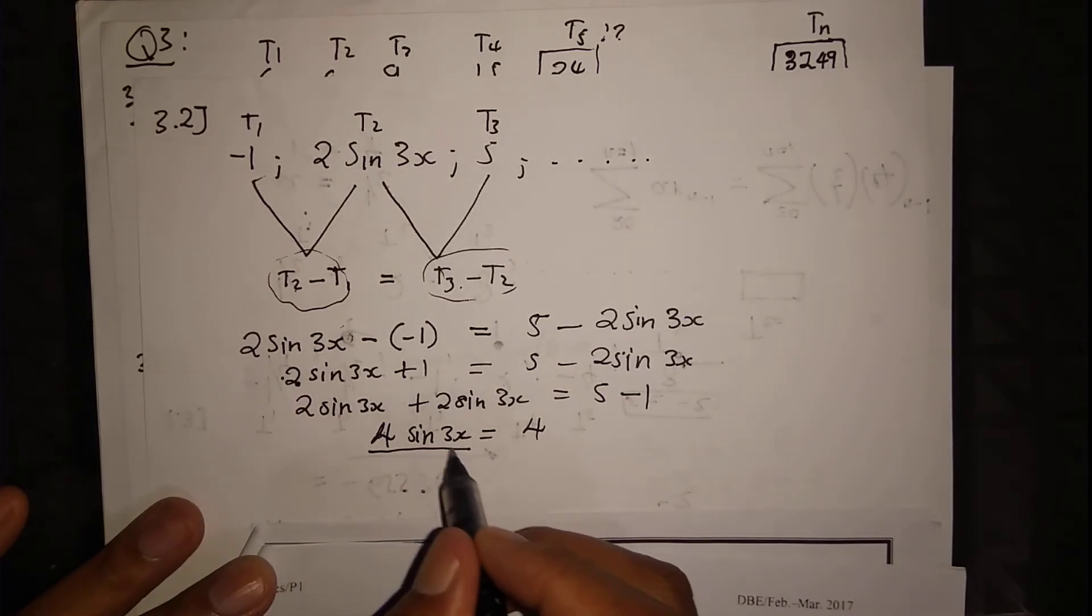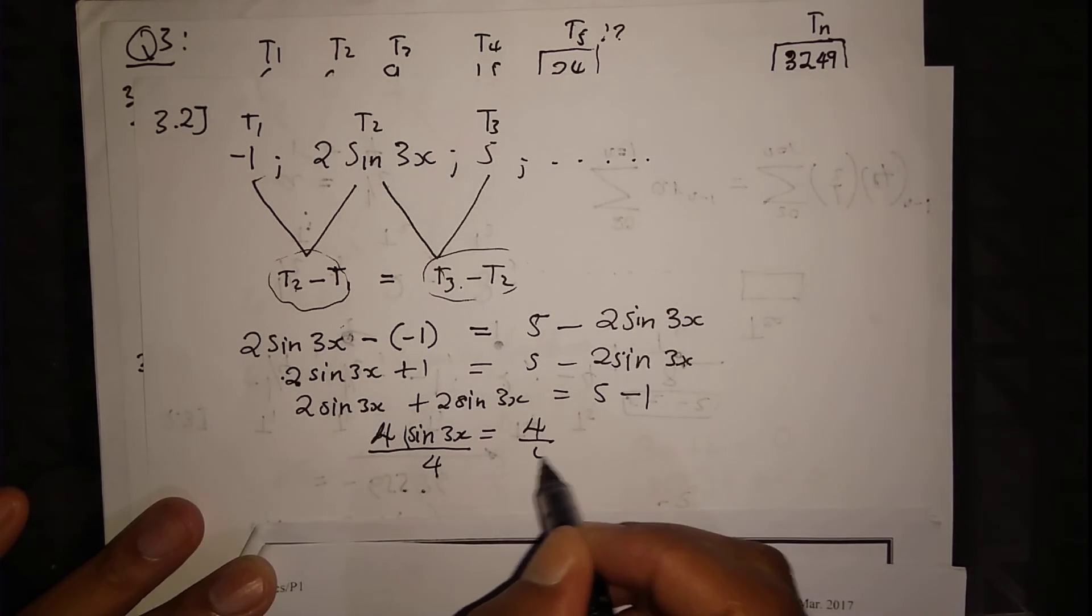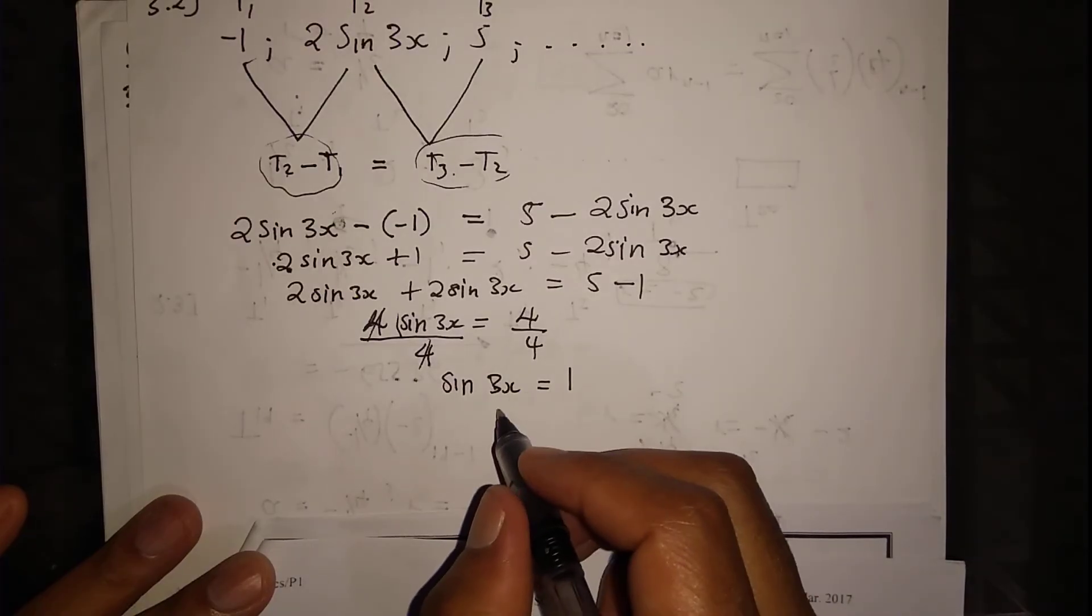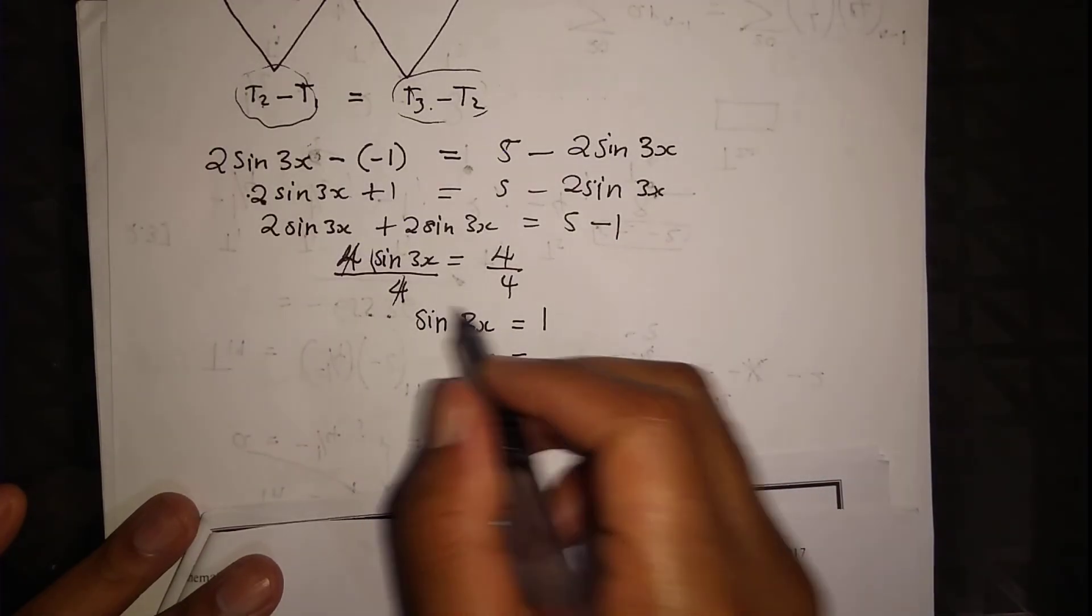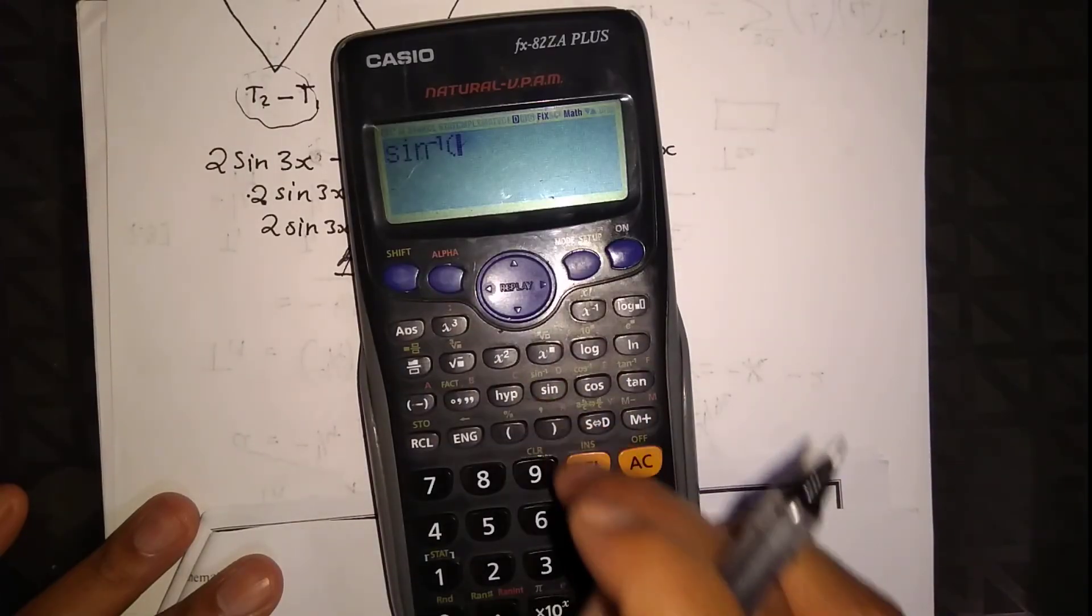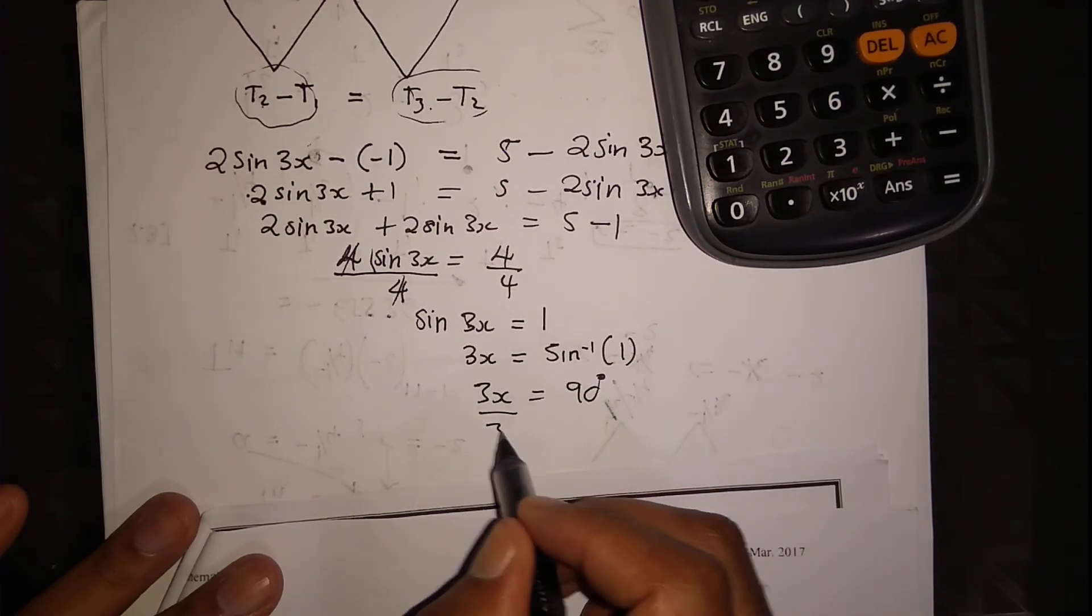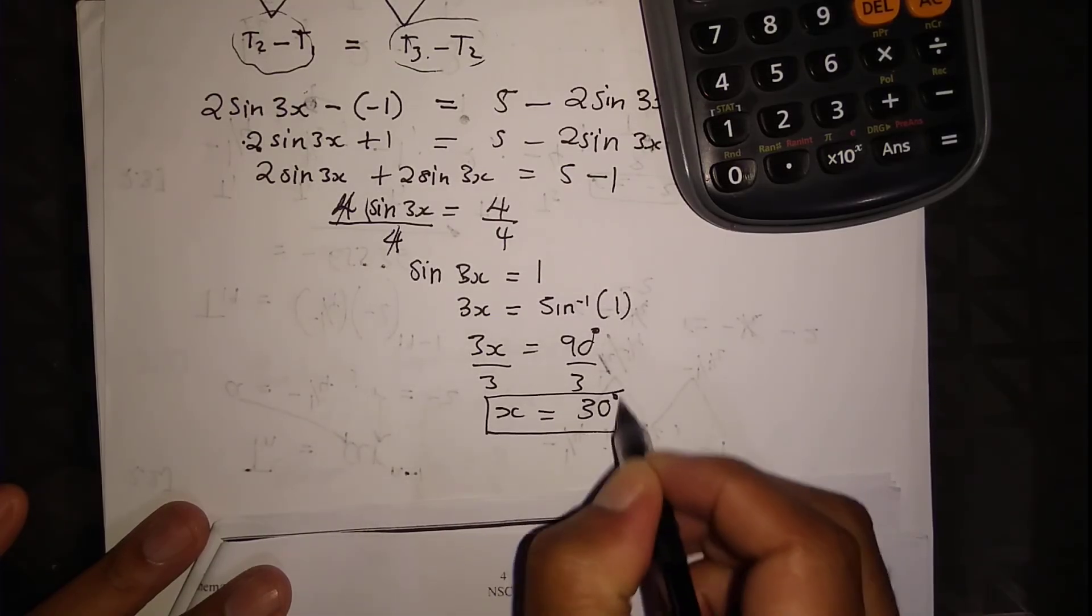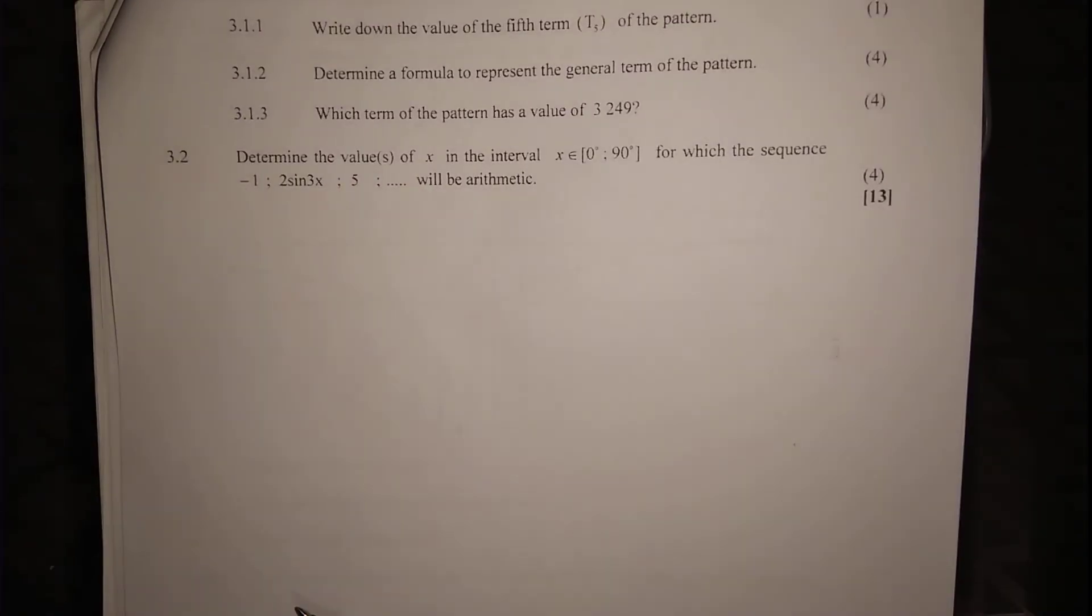Divide both sides by 4: sine 3x equals 1. The inverse sine function of 1 equals 90 degrees. So 3x equals 90 degrees. Divide both sides by 3: x equals 30 degrees. That's your final answer for 3.2, the last question.